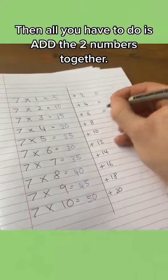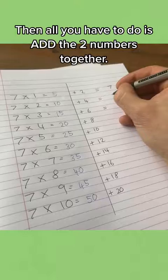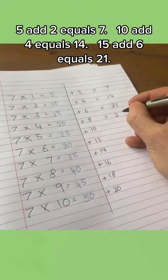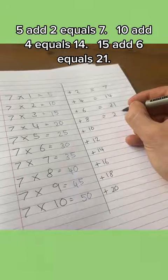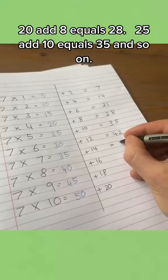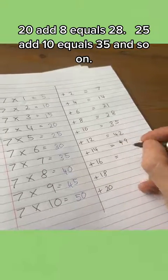Then, all you have to do is add the two numbers together. 5 add 2 equals 7. 10 add 4 equals 14. 15 add 6 equals 21. 20 add 8 equals 28. 25 add 10 equals 35 and so on.